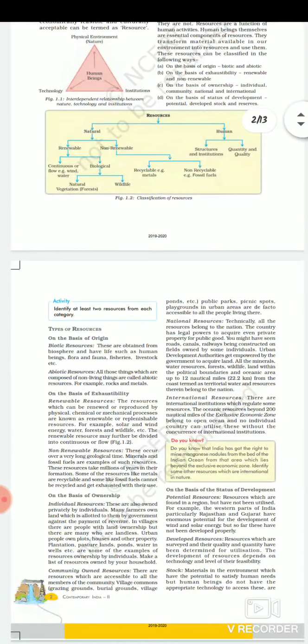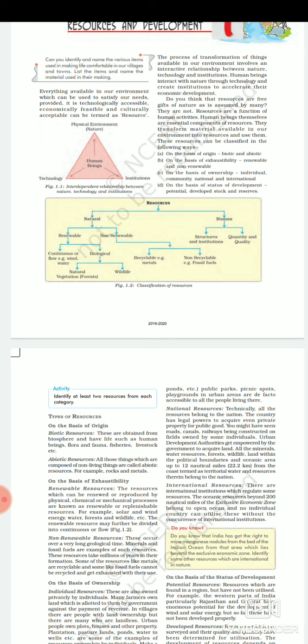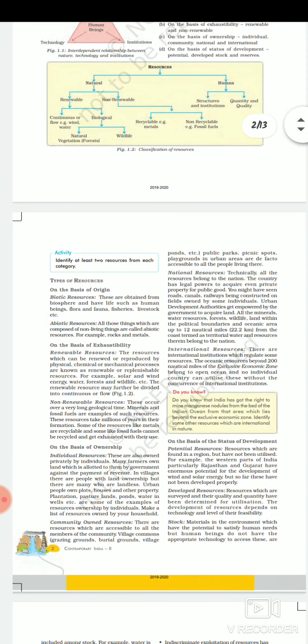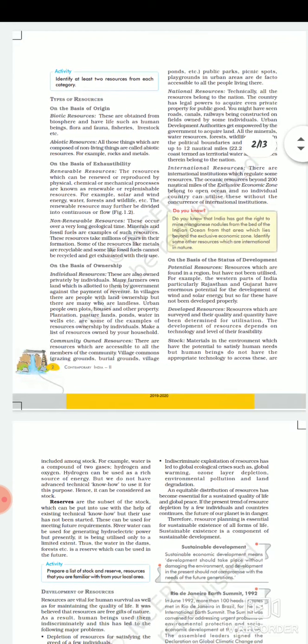Ab aate hain hum log types of resources. Yahan aap jaisa ki yeh aapka diagram bana hua hai, isme diya hua hai is table mein ki kis tarah se resource ko kitne bhaagon mein baatate hain hum log. On the basis of origin: biotic resources — these are obtained from the biosphere and have life, such as human beings, flora and fauna, fisheries, livestock, etc. Abiotic resources — all those things which are composed of non-living things are called abiotic resources. For example, rocks and metals.